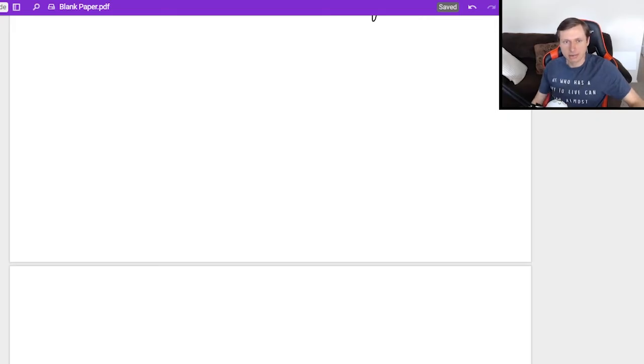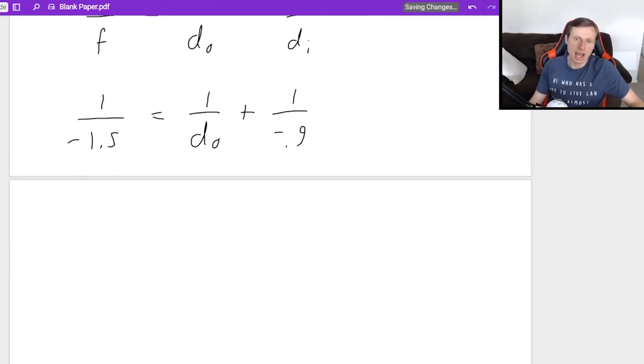So now plugging in here, I would get one over F equals one over DO plus one over DI. So since F is 1.5, well, negative 1.5 equals one over DO plus one over negative 0.9. All I need to do is add the negative 0.9 to both sides since it's already negative. And I'm going to plug that in my calculator. So I'm plugging in one divided by negative 1.5 plus one divided by 0.9.